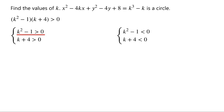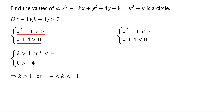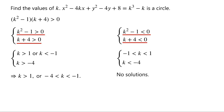From k squared minus 1 greater than 0, we have k greater than 1 or k less than negative 1. From k plus 4 greater than 0, k is greater than negative 4. Therefore, either k is greater than 1, or k is greater than negative 4 and less than negative 1. From k squared minus 1 less than 0, we have k greater than negative 1 and less than 1. From k plus 4 less than 0, k is less than negative 4. Clearly, there are no solutions for this case. Thus, the answer is k greater than 1, or negative 4 less than k less than negative 1.